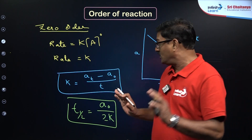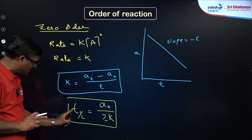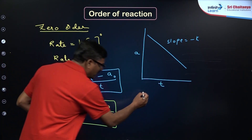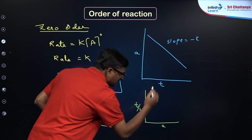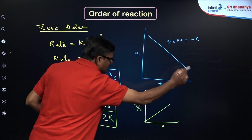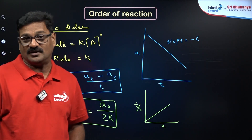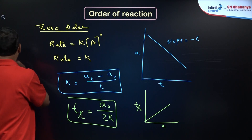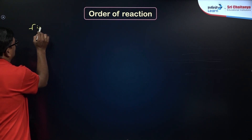These formulas are purely based on NCERT. For zero order reaction, t½ is directly proportional to [A]₀ — as the concentration of A increases, the half-life for zero order also increases. Now let us quickly talk about the first order reaction.